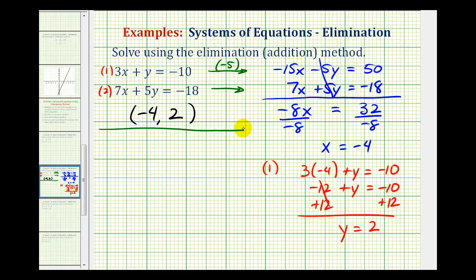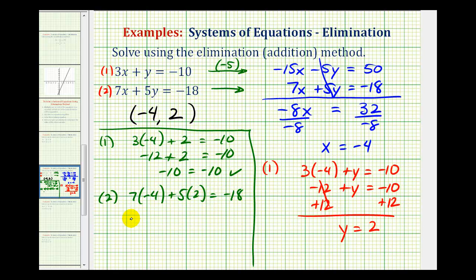Now let's go ahead and verify our solution. We'll substitute x equals negative 4 and y equals 2 into both equation 1 and equation 2. So for equation 1, we'd have 3 times negative 4 plus 2 equals negative 10. This would be negative 12 plus 2 which is negative 10. So this satisfies equation 1 and now let's check equation 2. We would have 7 times negative 4 plus 5 times 2 equals negative 18. So we have negative 28 plus 10 equals negative 18, which is also true.